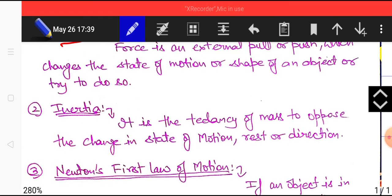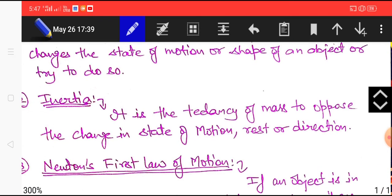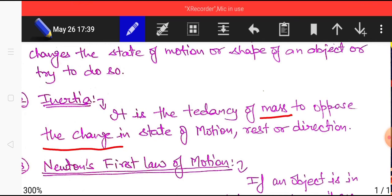The next thing is inertia. Inertia is the tendency of a mass to oppose the change in state of motion, rest, or direction.